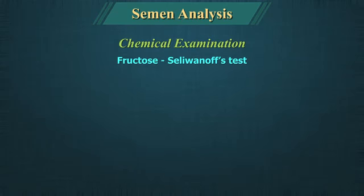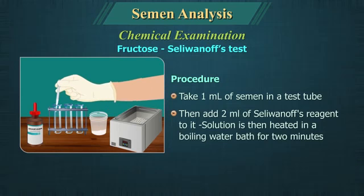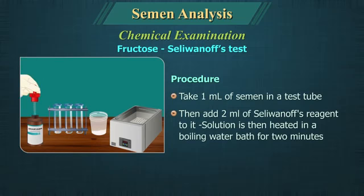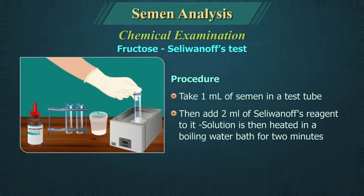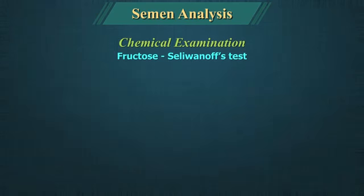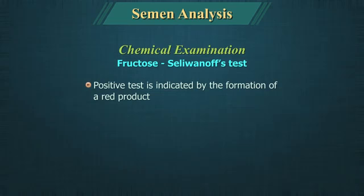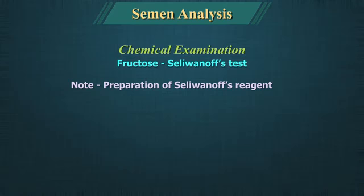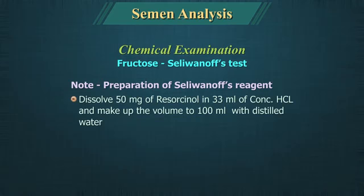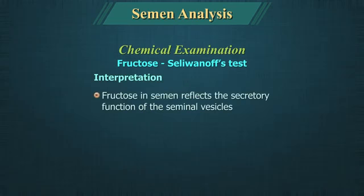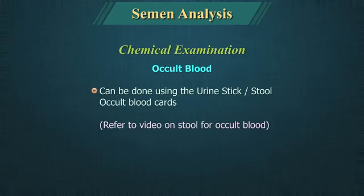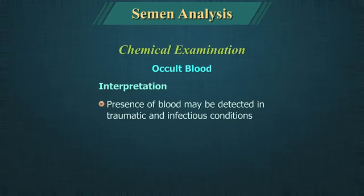Fructose using Selvinov's test — Procedure: Take 1 ml of semen in a test tube, add 2 ml of Selvinov's reagent, and heat in a boiling water bath for 2 minutes. A positive test is indicated by formation of a red product. For preparation of Selvinov's reagent, dissolve 50 mg of resorcinol in 33 ml of concentrated hydrochloric acid and make up to 100 ml with distilled water. Fructose in semen reflects the secretory function of the seminal vesicle. Occult blood can be done using urine sticks or stool occult blood cards; presence of blood may be detected in traumatic and infectious conditions.